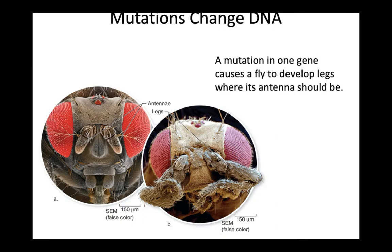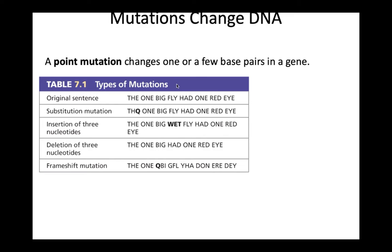Mutations are changes in cellular DNA that result in proteins being incorrectly formed or incorrectly functional, causing strange things to occur in organisms. For example, this particular fly had a mutation that made it develop legs instead of antennae — legs growing out of its forehead. DNA is read in little three-letter segments called codons. A point mutation occurs when one single nucleotide changes.